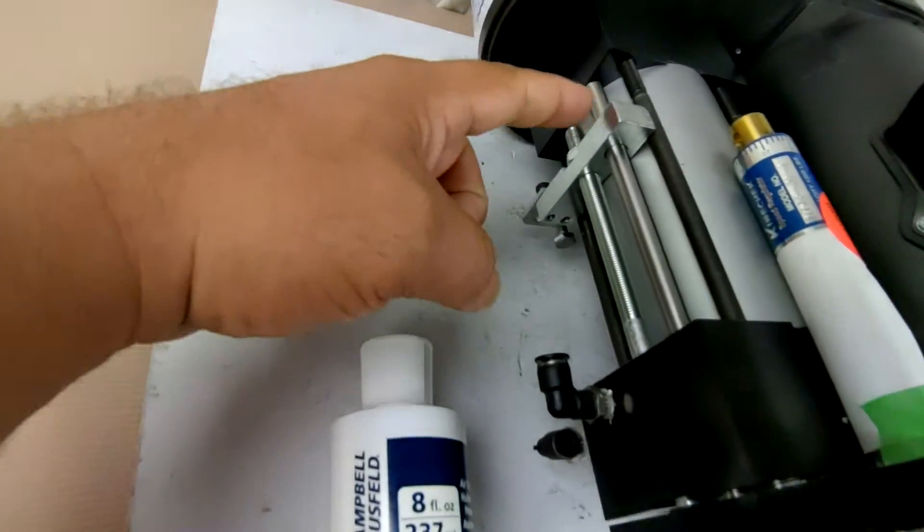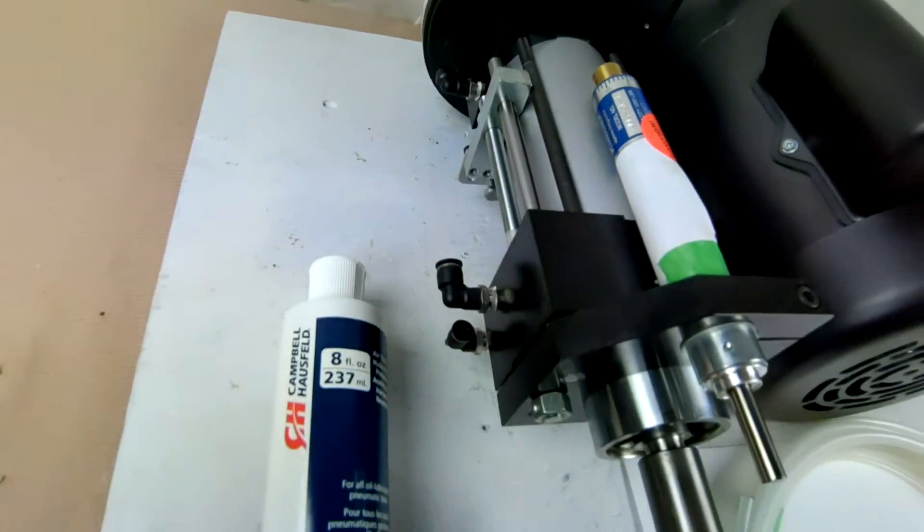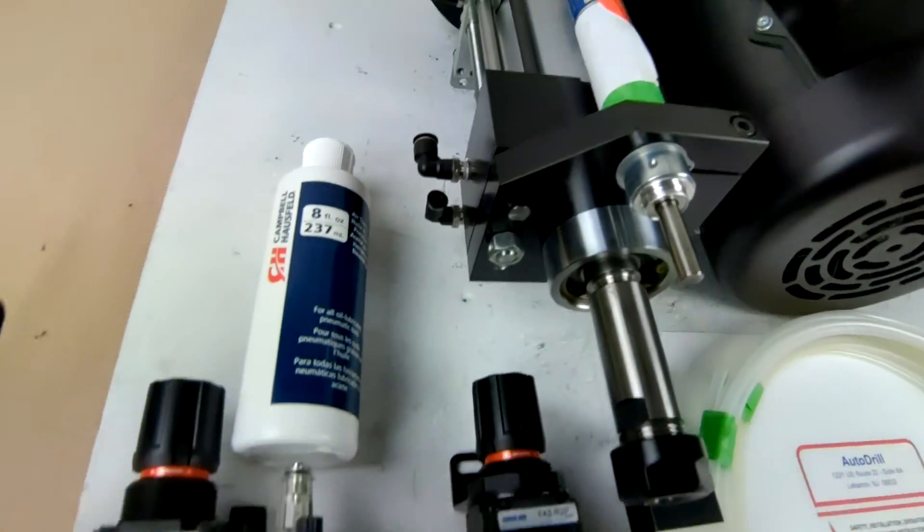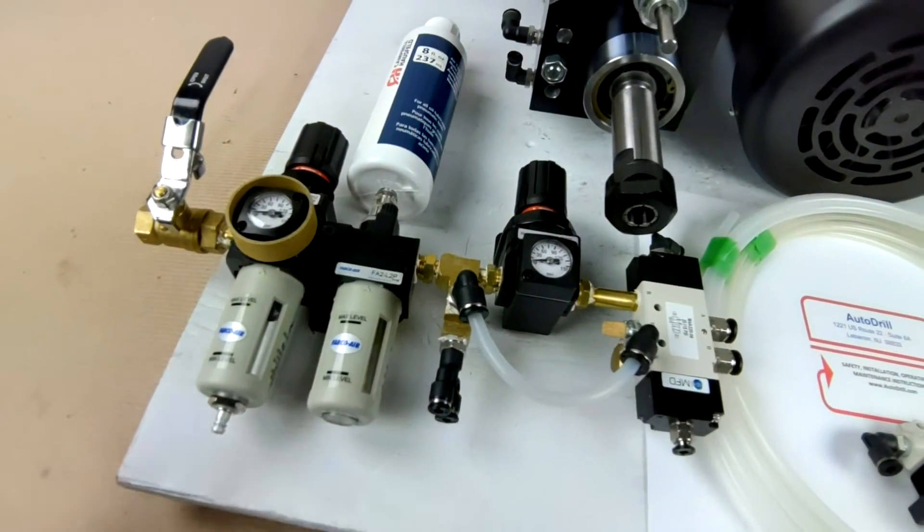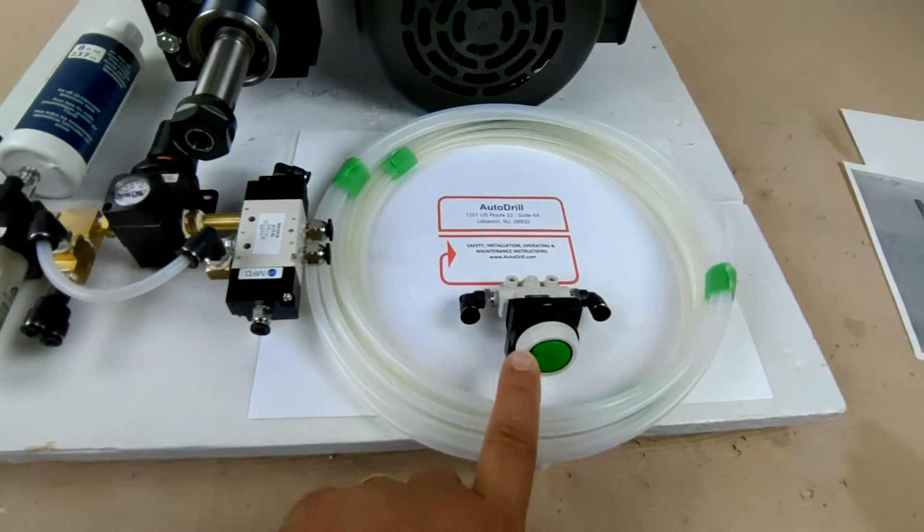And so the unit automatically hits the limit switch with the trigger that we build in, and it rapids back. You can adjust the stroke of the unit down to one inch or have a full four inches of stroke, whatever you need, with your hydro-speed hitting the stop where necessary. Then this control package will allow that thing to rapid forward, do what it needs to do, rapid back, and wait for you to press that start button again.